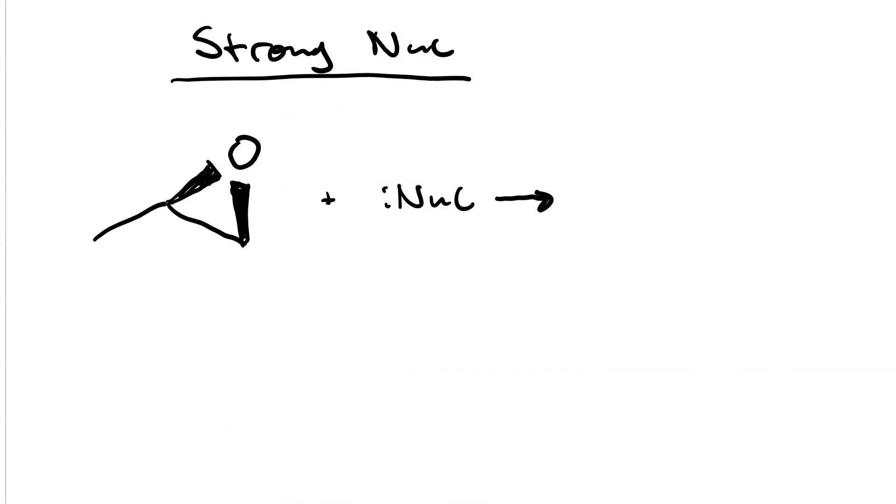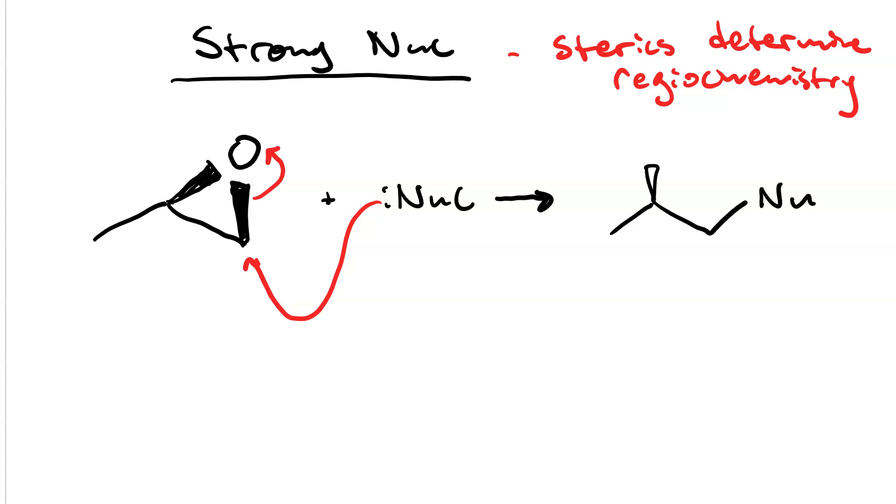So when you react your epoxide with a strong nucleophile, where will the nucleophile attack, the less substituted position or the more substituted position? The answer is as simple as sterics. The nucleophilic attack is going to happen at the less substituted position, so the nucleophile attacks there and the ring opens, which is technically loss of a leaving group. Our product is an alkoxide with the oxyanion in the more substituted position.